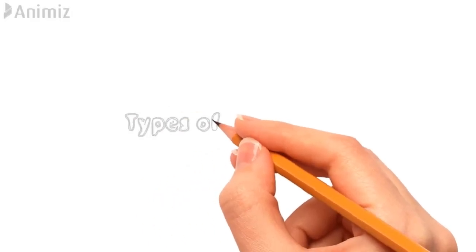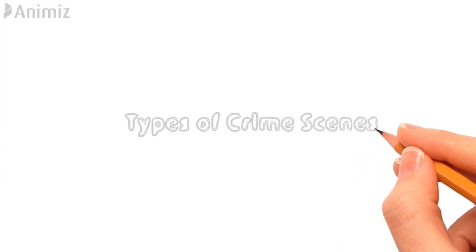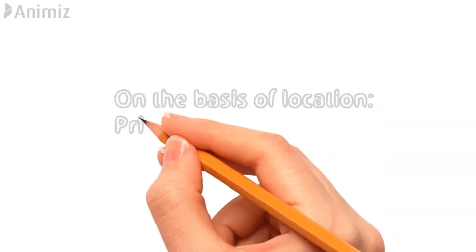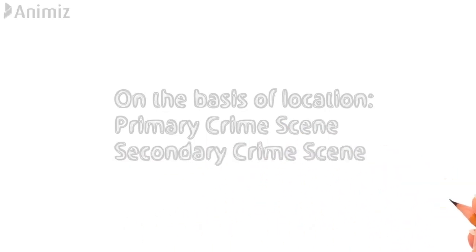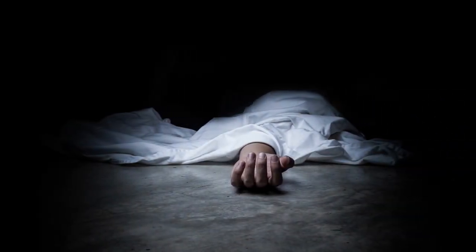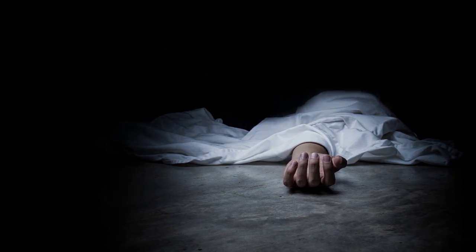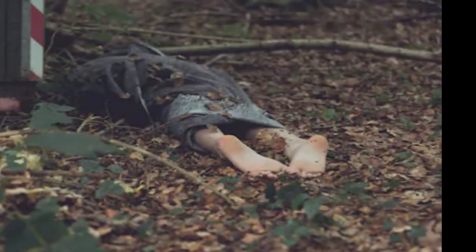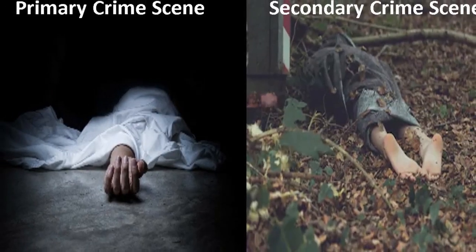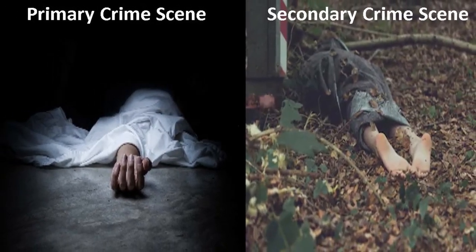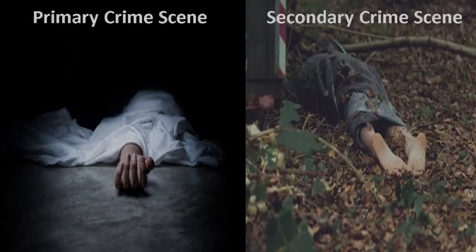Now moving forward to understand the types of crime scenes. On the basis of location, crime scenes can be designated into primary and secondary crime scenes. For example, if a person was killed in a house and the body was later dragged and dumped in a forest, then the house becomes the primary crime scene while the forest where the body was discovered is the secondary crime scene.